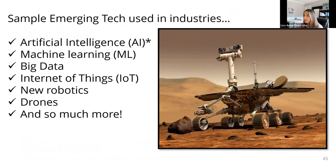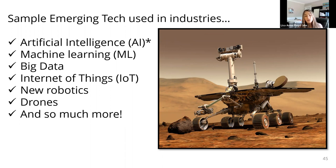Some examples of emerging technology that work well connecting to the grades one to eight strands include: artificial intelligence — with emphasis in grades seven and eight where it's listed explicitly — machine learning, big data, Internet of Things, new robotics, and drones. AI is also in the grade nine science curriculum. There are many more but these connect well to curriculum strands.